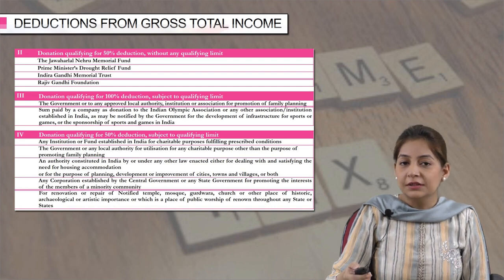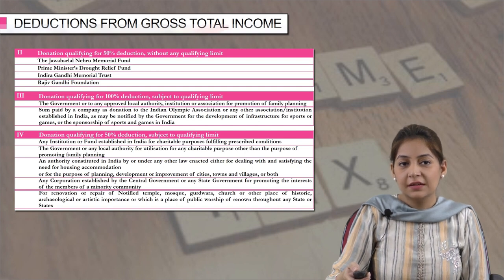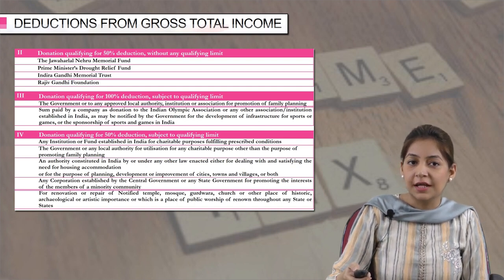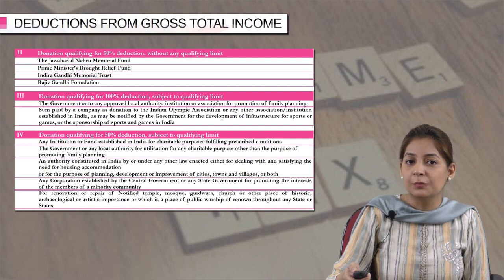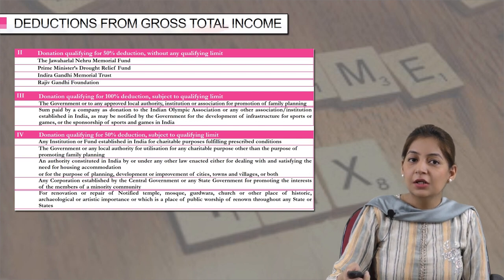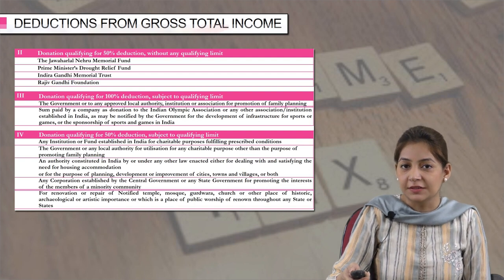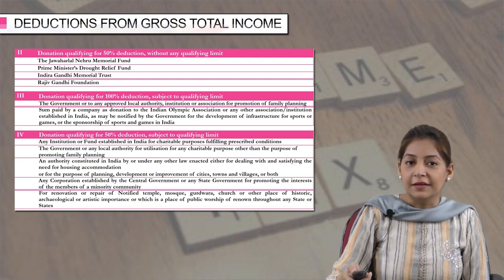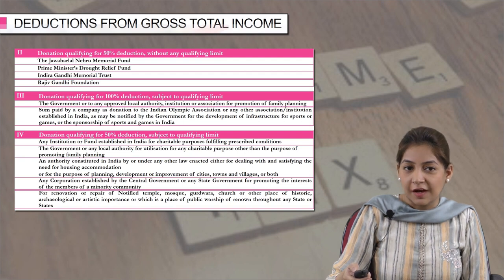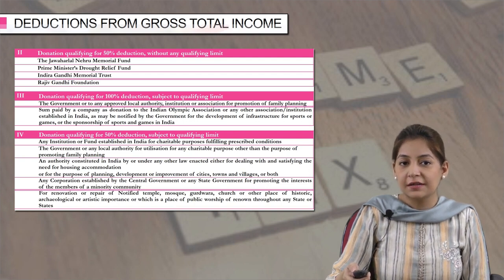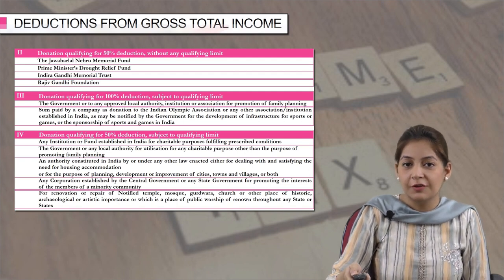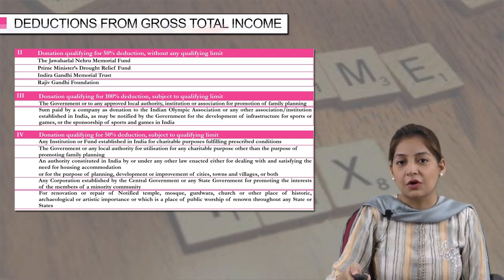The last two categories are where there is a ceiling of 10 percent of the adjusted GTI. In the third category, if you have donated to the government or any approved local authority, institution, or association for promotion of family planning, you can claim 100 percent deduction subject to a qualifying limit of 10 percent of adjusted GTI. Lastly, if you have donated to any of the five funds mentioned in the last category, you can claim 50 percent again subject to the qualifying limit of 10 percent of adjusted gross total income.